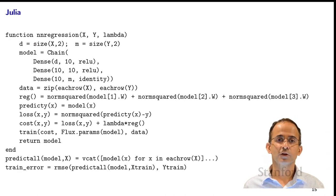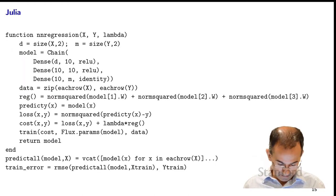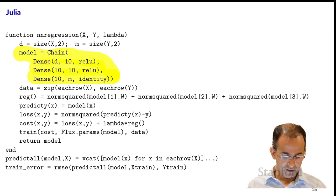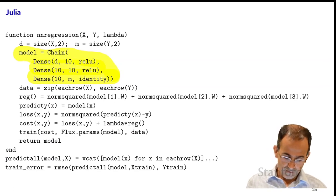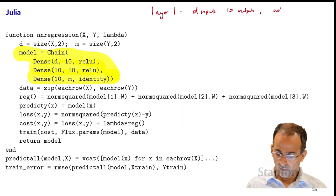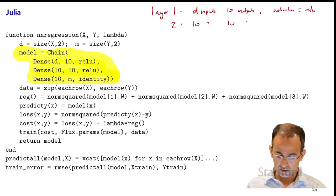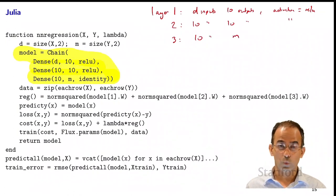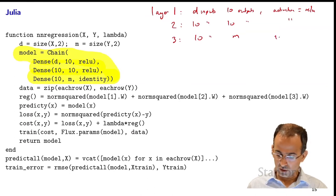In Julia, this is a glimpse at the neural network regression function used to train the previous example. This code defines the network structure. It says we have three layers: layer 1 has d inputs and 10 outputs with a ReLU activation; the second layer has 10 inputs and 10 outputs, also with ReLU; and the third layer has 10 inputs and m outputs — where m is 1 and d is 2 in this case — with an identity activation because we're solving a regression problem.